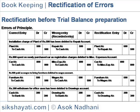Rs.800 spent on a newly purchased car as registration charges was debited to miscellaneous expenses account. The rectification entry would be as follows. Rs.500 paid as wages to bring furniture was debited to wages account. The rectification entry would be as follows.